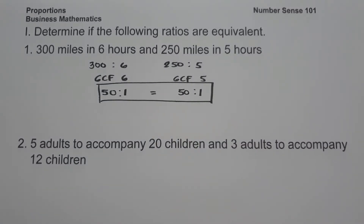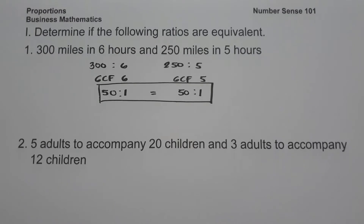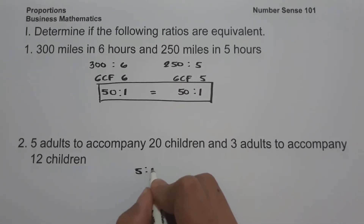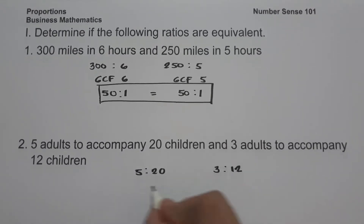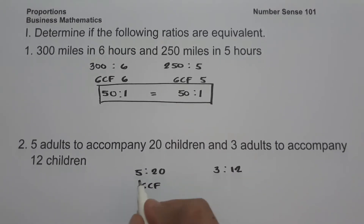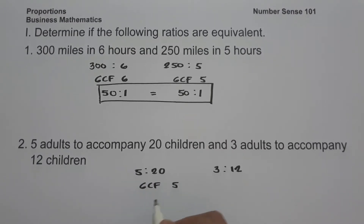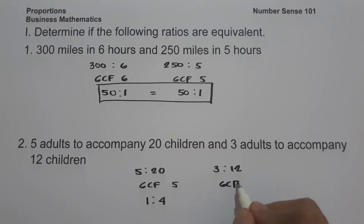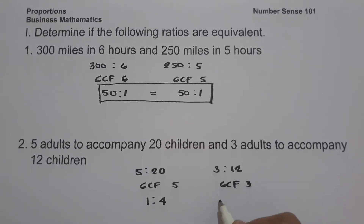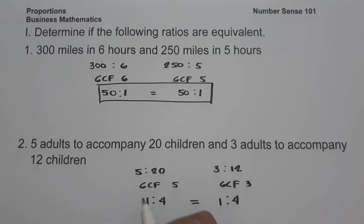On example number two: 5 adults to accompany 20 children, and 3 adults to accompany 12 children. We have 5 is to 20, and on the other side 3 is to 12. The GCF between 5 and 20 is 5, giving 1 to 4. The GCF between 3 and 12 is 3, giving 1 to 4. Since we have the same ratio, therefore they are equivalent.